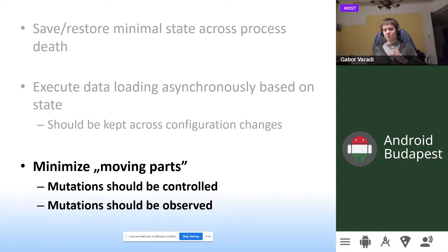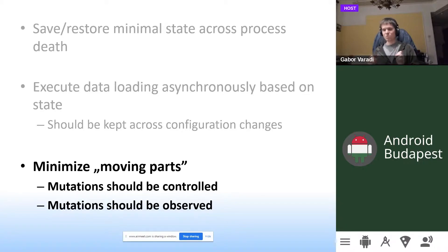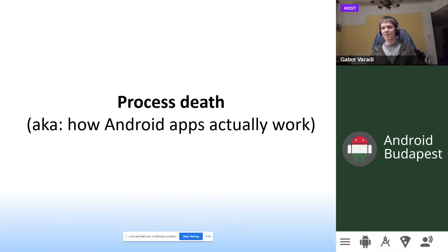There is always a case when data is not available. Where reactivity comes in is minimizing the number of bugs by minimizing the number of moving parts — things that can change without expecting them, like modifying an object that nobody is observing but others depend on its values. To prevent these sorts of mistakes we can rely on reactive design, where mutations should always be controlled and always observed, so that whenever there's a change that someone cares about, they are able to know about it.